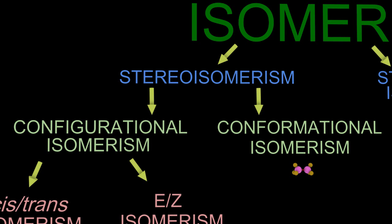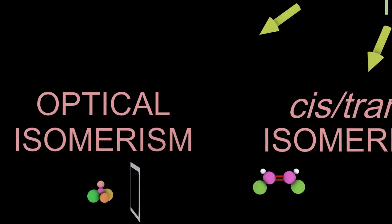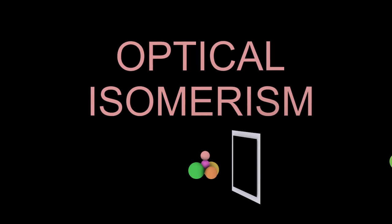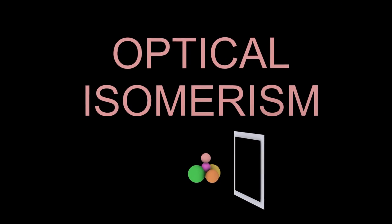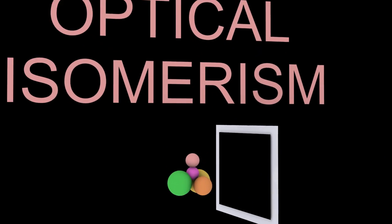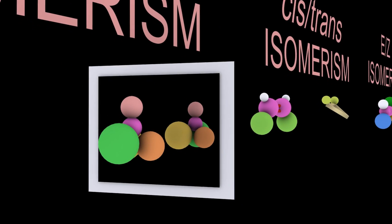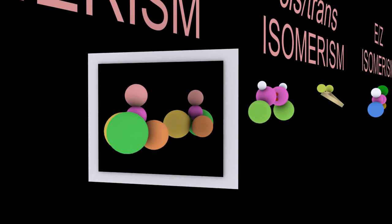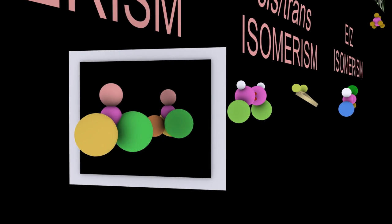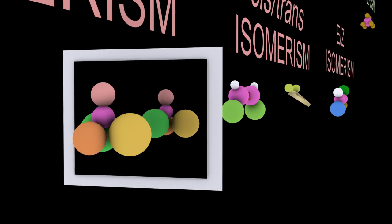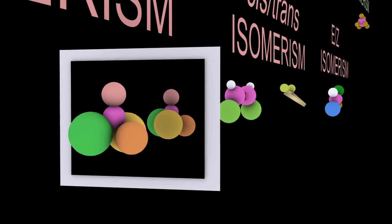Configurational isomers involve breaking bonds, and a subset of those are the optical isomers. Those can be made by looking at the mirror image of the molecule, and that gives you the pair of enantiomers or stereoisomers.